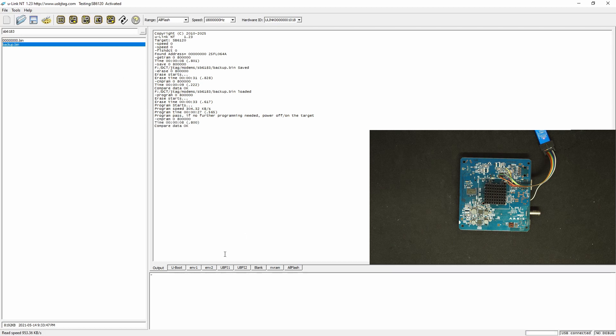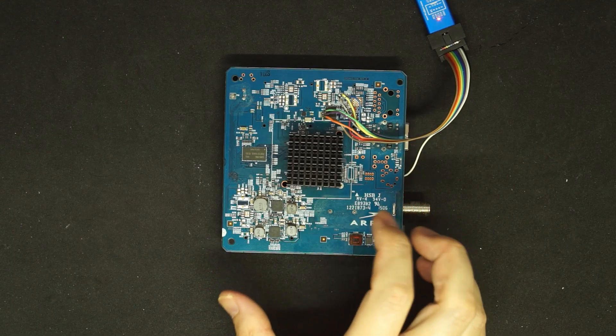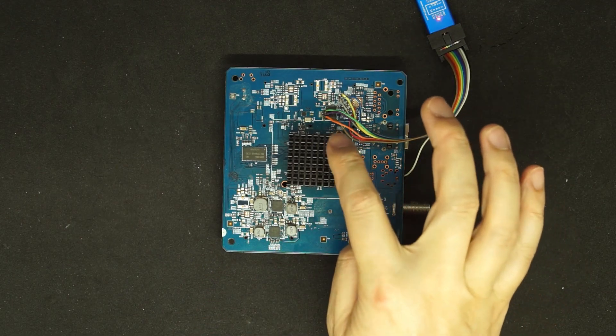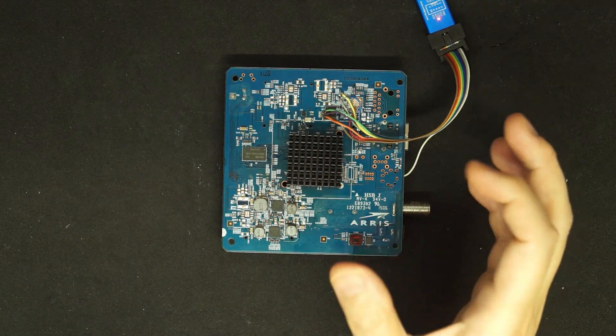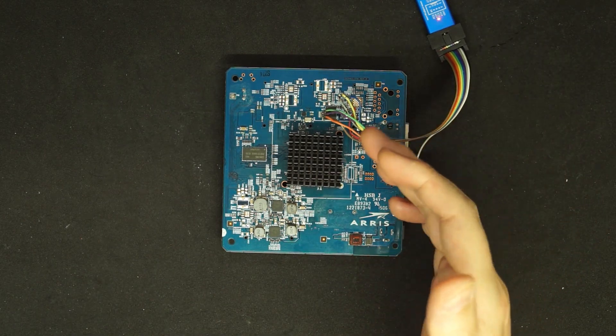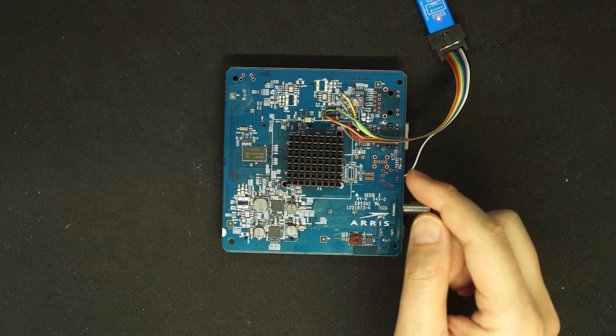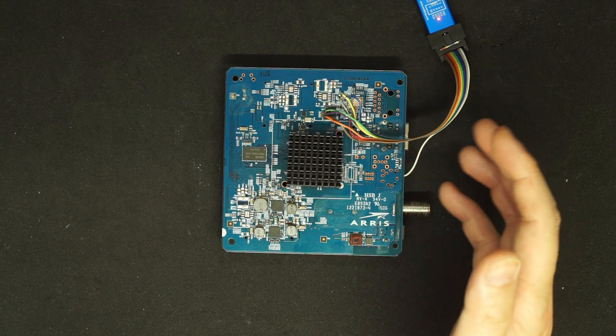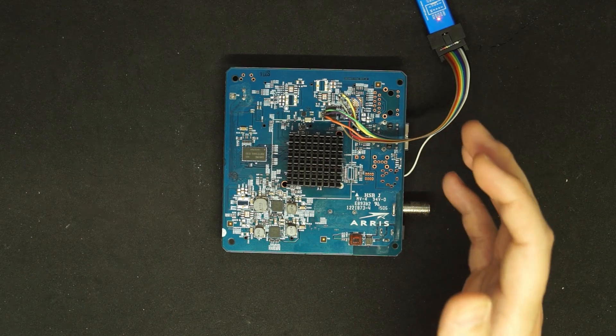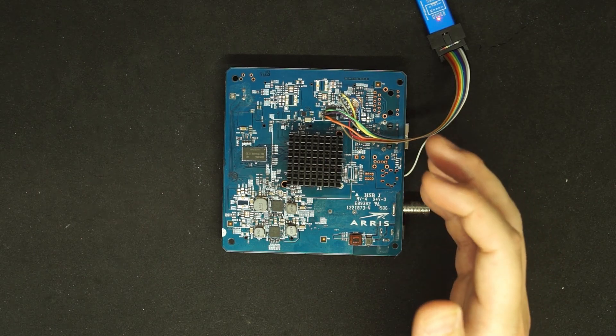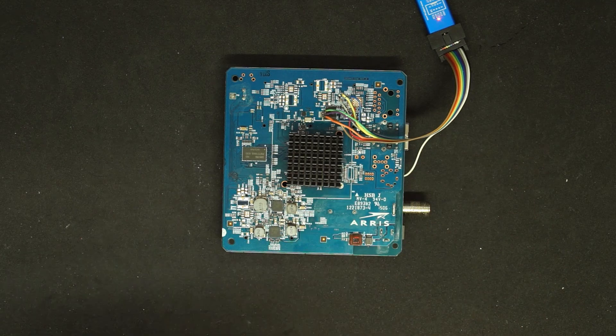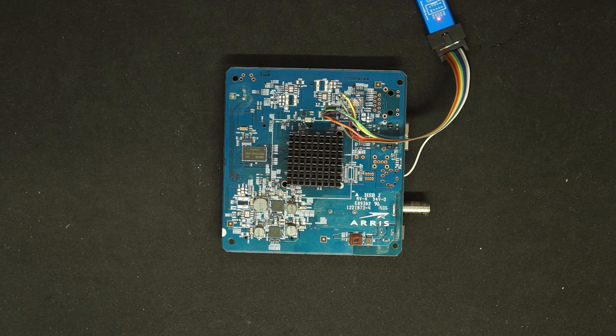Now the key point for this modem is we need to solder the wires, very thin wires. Instead of the others where we can use a clip, here you have to manually solder it. That's the only difference and everything else will be similar to the SP6120 or SP6141 or SP6121.